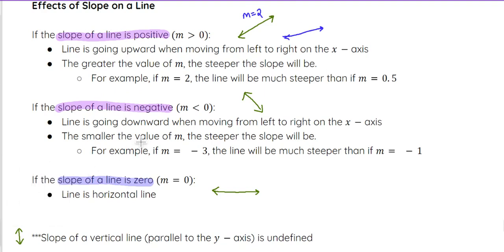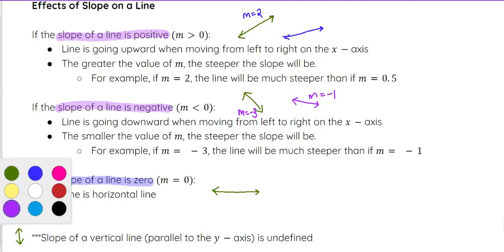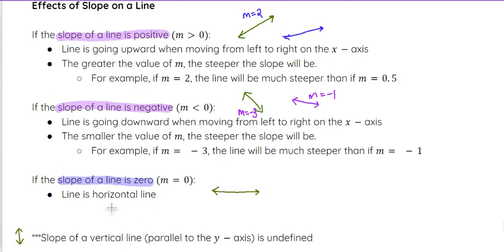The same concept applies with negatives — negative three is going to be much steeper than negative one as a slope. So if this is a slope of negative three, then a slope of negative one might be a little more close to a horizontal line, but it's still negative and still going down from left to right. And if the slope is zero, it is just a horizontal line.